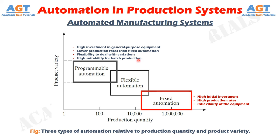And high suitability for batch production. Programmable automated systems are used in low and medium volume production. The parts or products are typically made in batches. To produce each new batch of a different item, the system must be reprogrammed with the set of machine instructions that correspond to the new item. The physical setup of the machine must also be changed — tools must be loaded, fixtures must be attached to the machine table, and any required machine settings must be entered. This changeover takes time. Consequently, the typical cycle for a given batch includes a period during which the setup and reprogramming take place, followed by a period in which the parts are produced. Examples of programmable automation include numerically controlled (NC) machine tools, industrial robots, and programmable logic controllers.